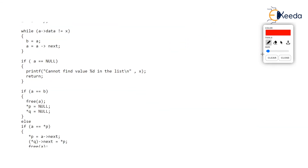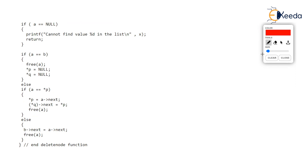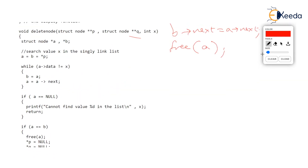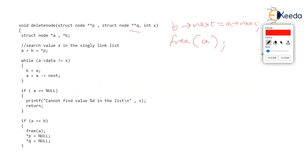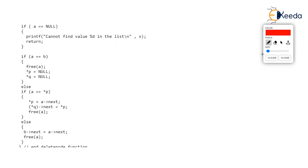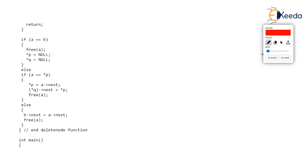I would advise all of you to go through the delete node function code on your own, or you can come up with your own version. You can also search online for how to delete a node from a circular linked list. When we meet on the live chat we can have a discussion on this. Thank you very much.